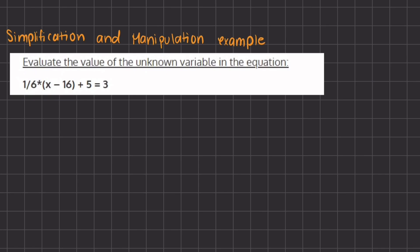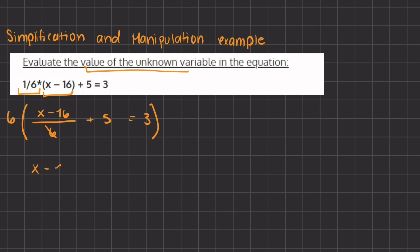In this problem, we are going to use simplification and manipulation methods to find the value of the unknown variable x. We rewrite the expression as x minus 16 divided by 6 — the same as one-sixth times the expression — plus 5 equals 3. The first thing we do is manipulate this expression by getting rid of the fraction, by multiplying every term by the denominator. The 6s cancel out, leaving us with x minus 16 in the numerator.